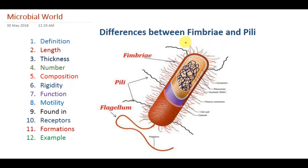At the beginning I would like to start from their definitions. First, if I talk about pili, it is a short, hollow, non-helical structure — like microfibers — that comes out from the cell surface of bacteria. On the other hand, if we consider fimbriae, it is tiny crystal-like fibers, the smallest structures, that also come out from the cell surface of bacteria.